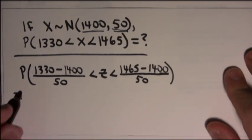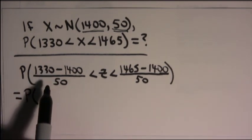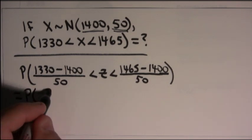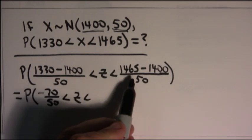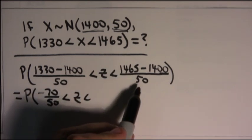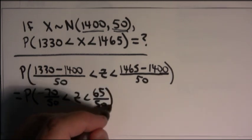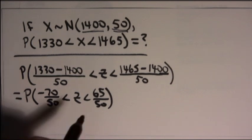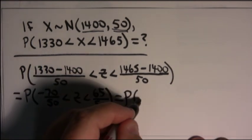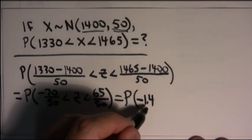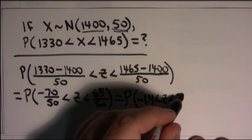And then, do the arithmetic. If you do the arithmetic here, you end up with 1330 minus 1400, which is negative 70 over 50. And then, 1465 minus 1400 comes out to be 65. So, you end up with 65 over 50. And then, just use your calculator to change those to decimals. And that gives you the probability that z is between negative 1.4 and positive 1.3.